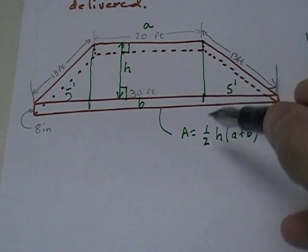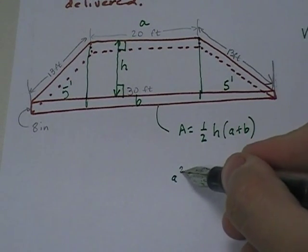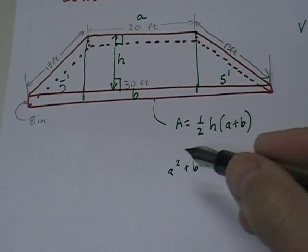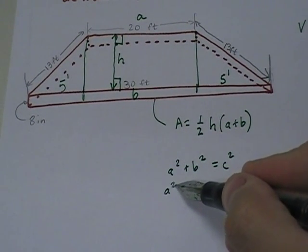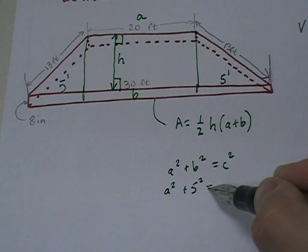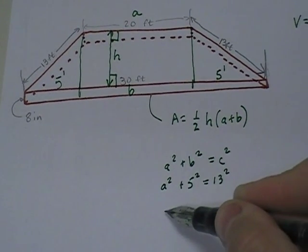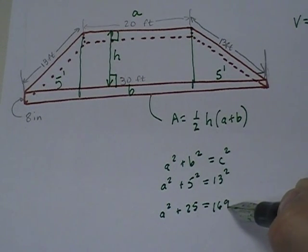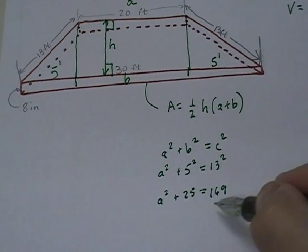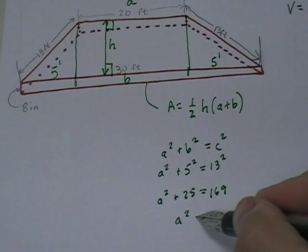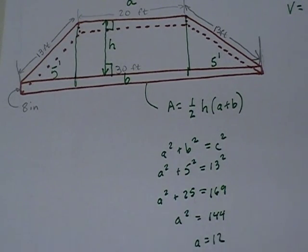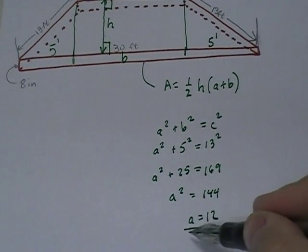What do we do? We say a squared plus b squared equals c squared. And I'm going to say, a squared plus 5 squared equals 13 squared. So a squared plus 25 equals 169. And if I subtract 25, I get a squared equals 144. a equals 12. Yay!